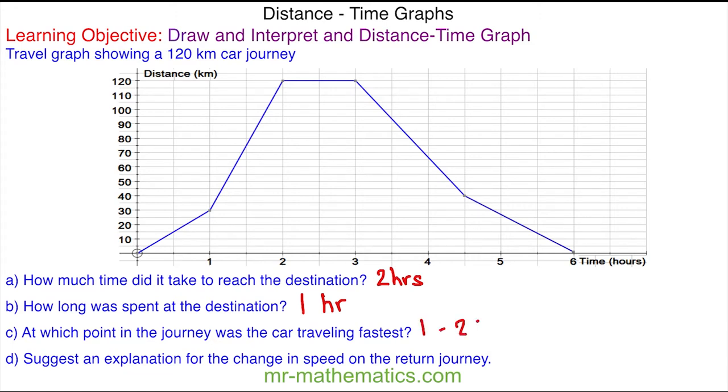For part D, suggest an explanation for the changing speed on the return journey. You can see in this line the changing speed is slower than this line because it is less steep, and this could be explained by congested traffic. Let's try another question.